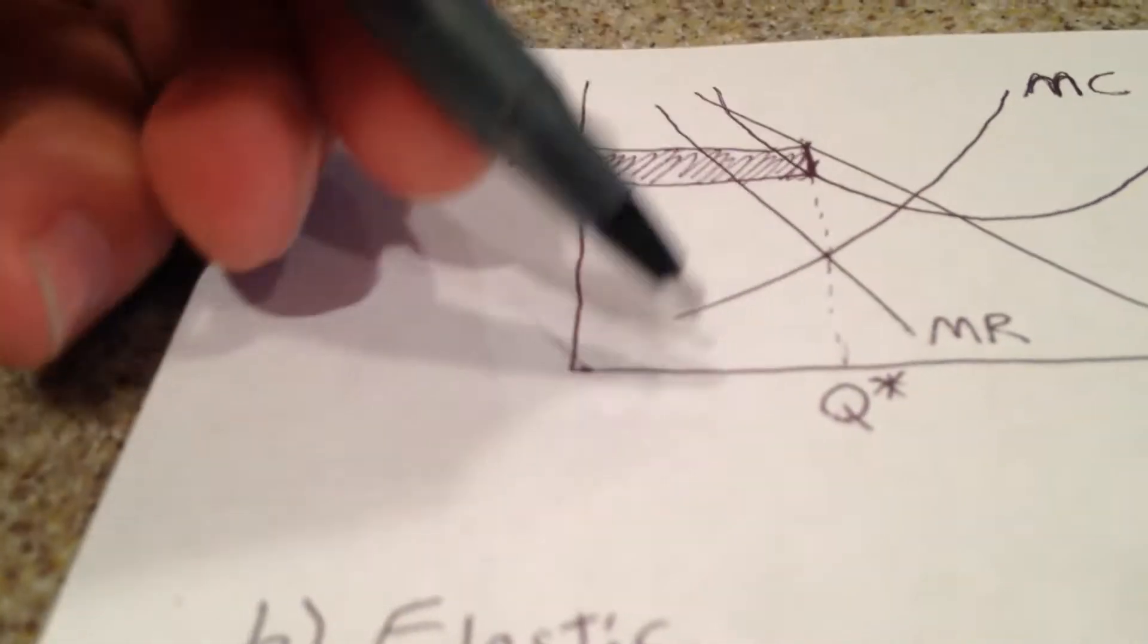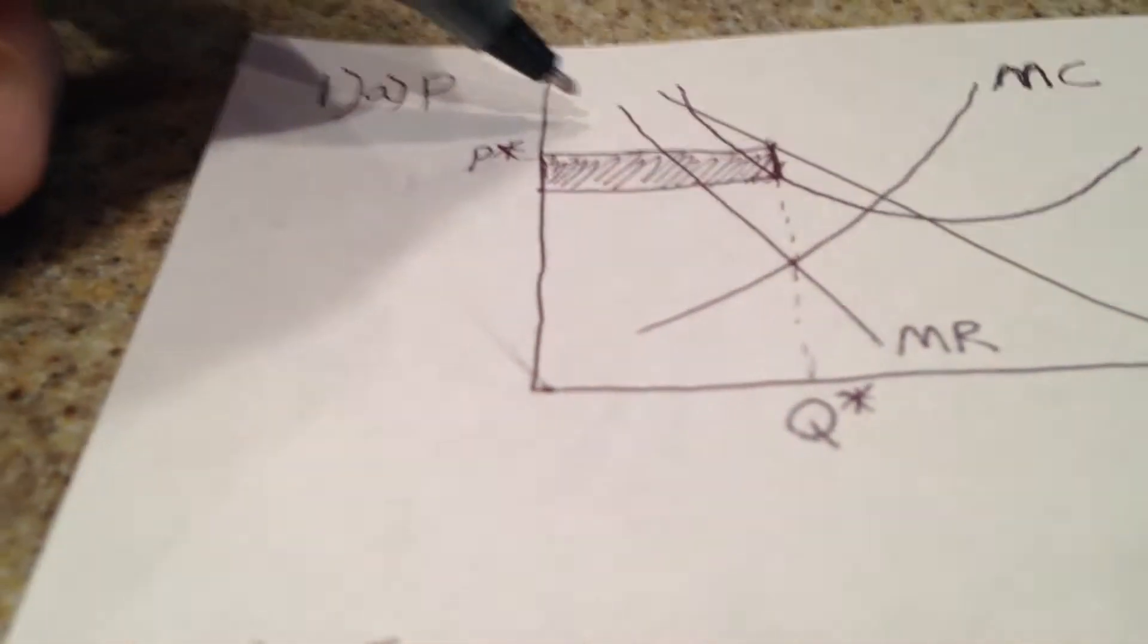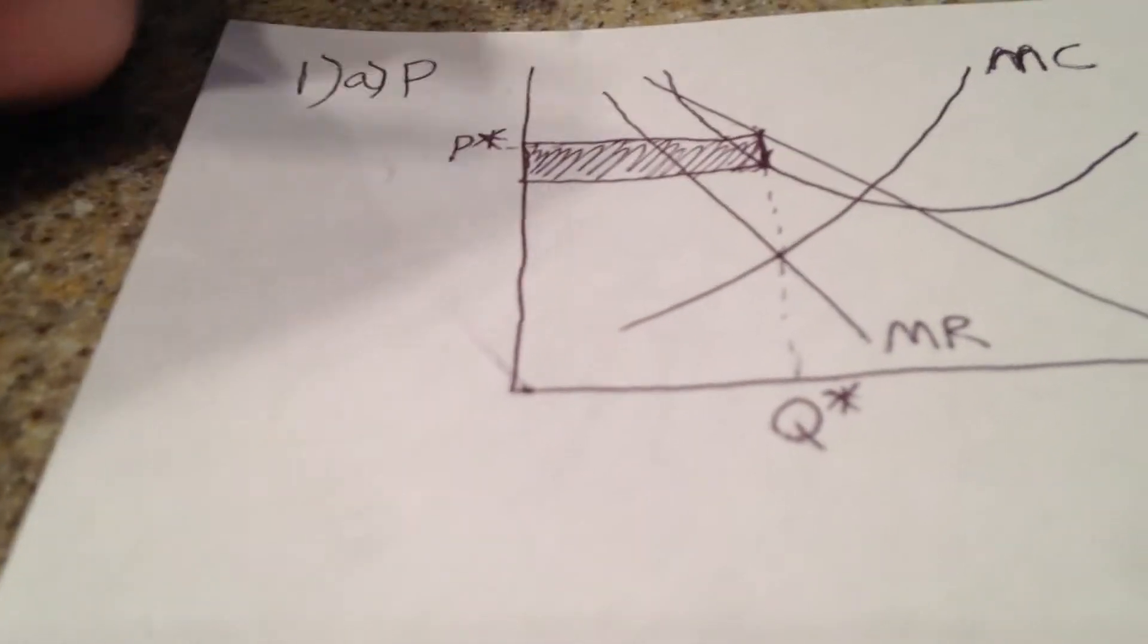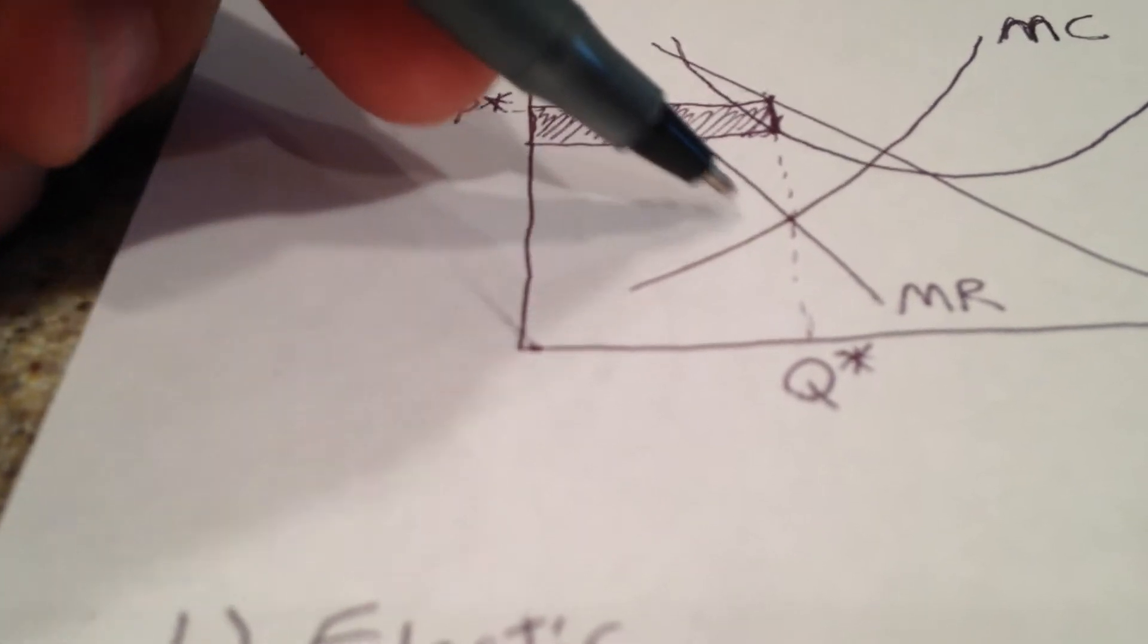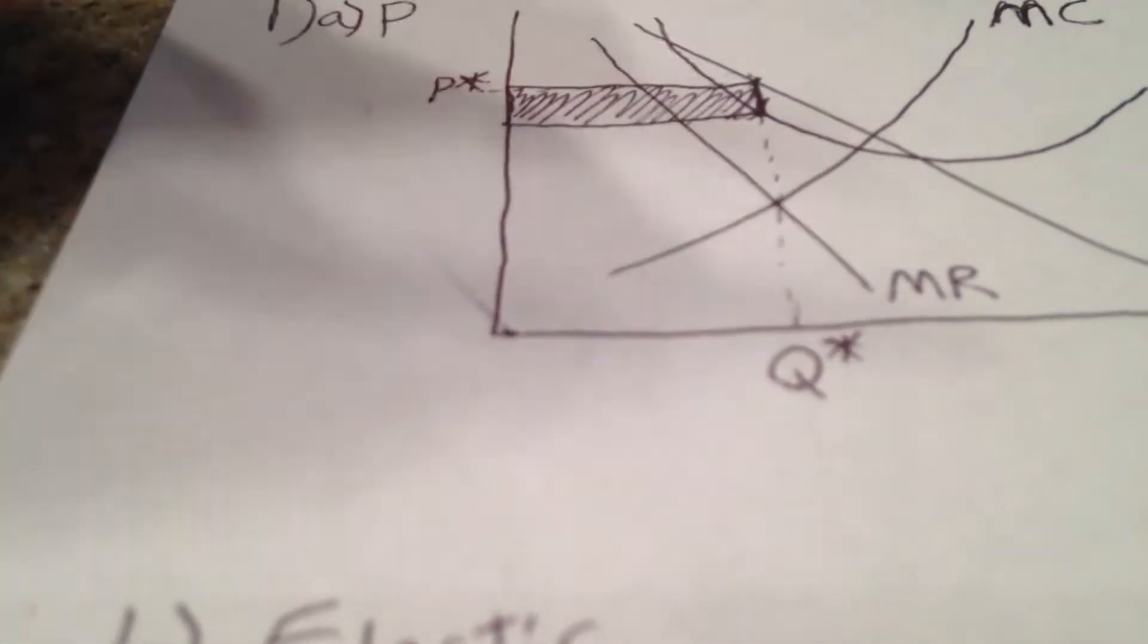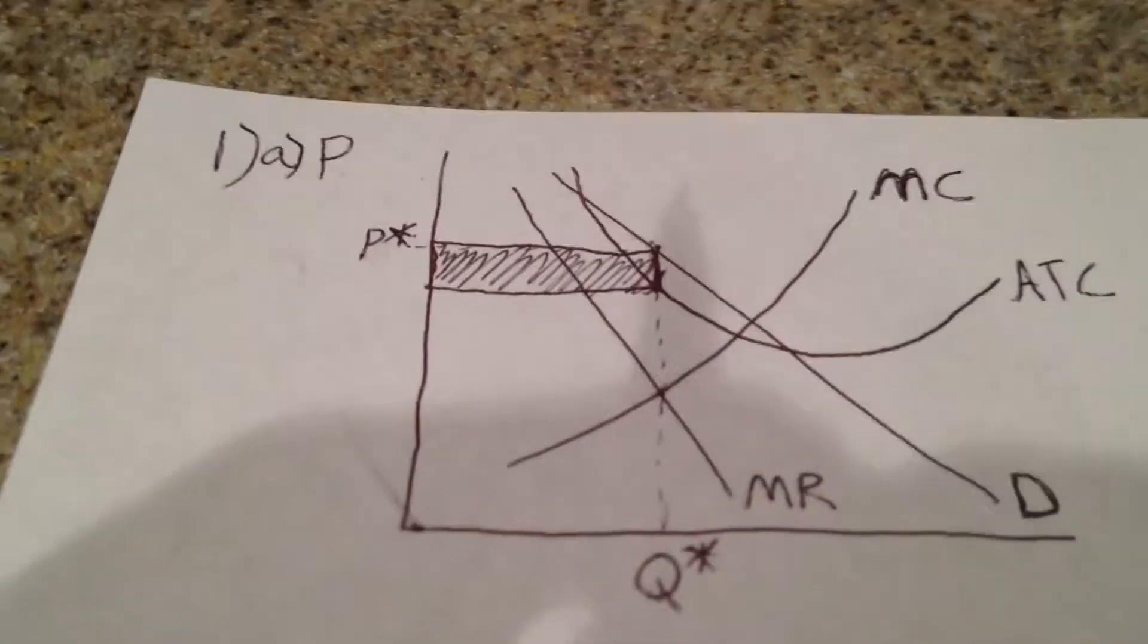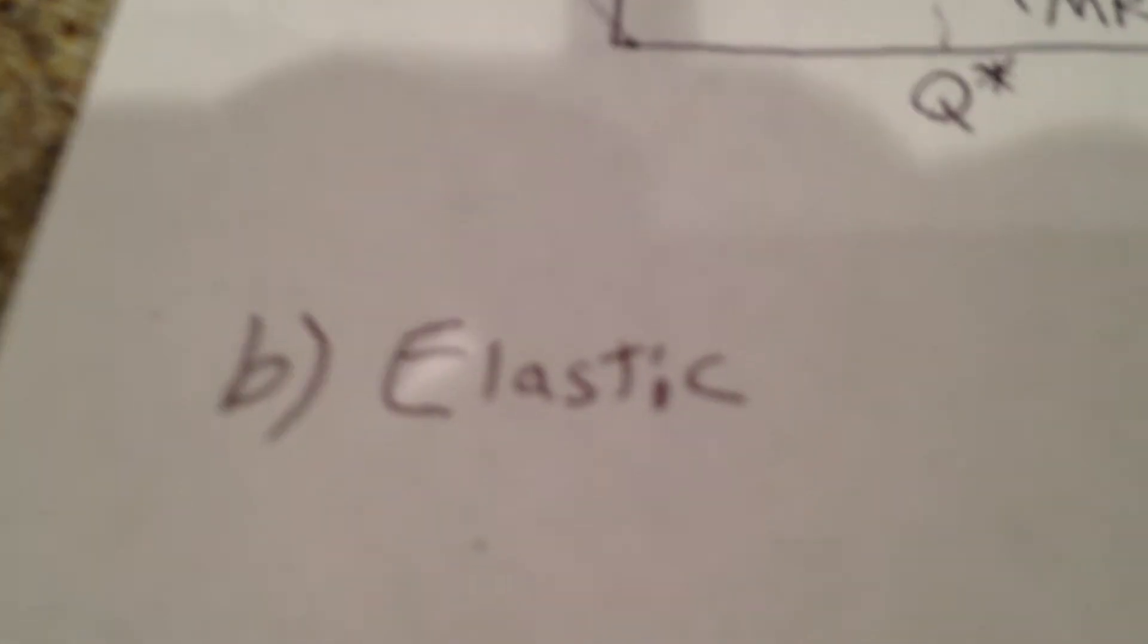In the elastic region, as output increases, well, first of all any region, as output increases, the price decreases. But in the elastic region, as that price decreases, your revenue is going to increase. So firms are going to want to increase their revenue as they lower their price, or else they wouldn't lower their price. So that tells us the answer to B, which is that it's elastic.